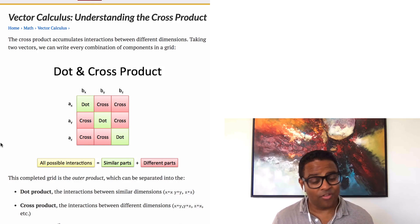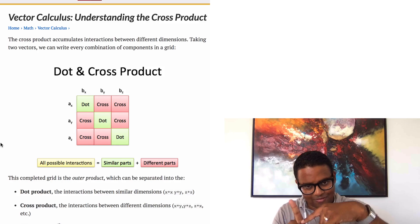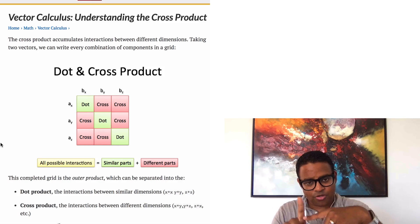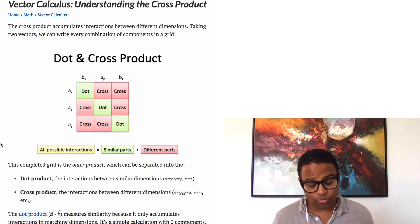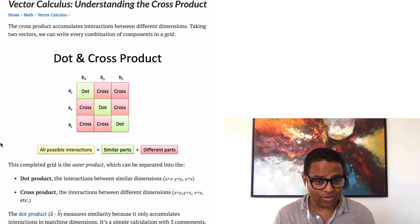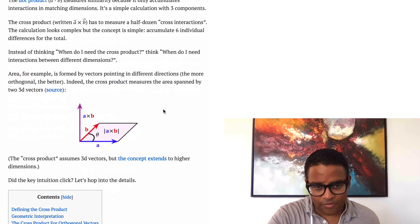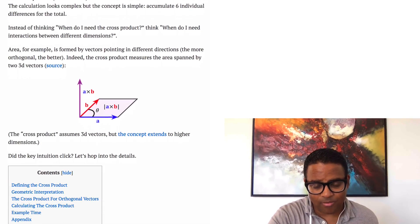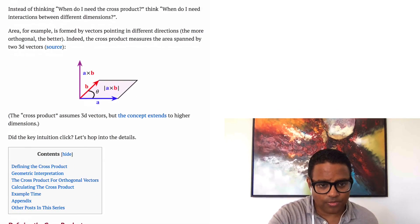Another example from physics is torque — torque basically looks at things happening in different directions, not the same direction. So there are reasons you want to measure things that are different, and sometimes you want to measure things that are the same. The area is being formed by things in different directions, not the same direction.